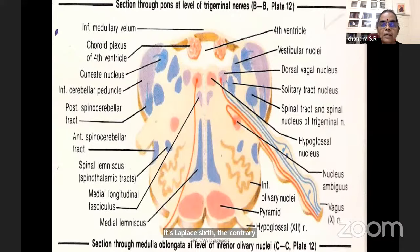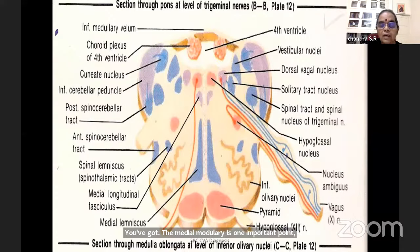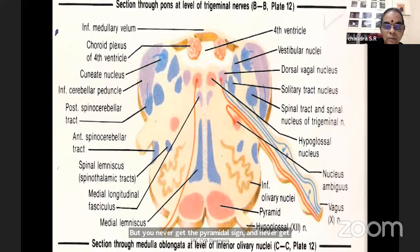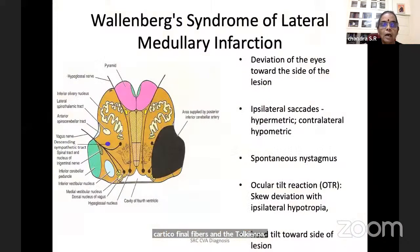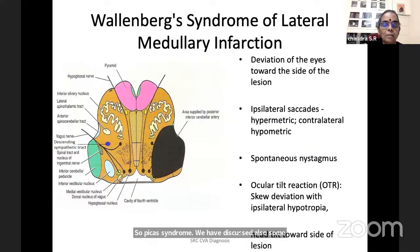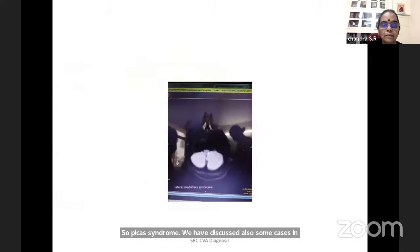In the medulla, there is medial medullary and lateral medullary syndrome. Lateral medullary syndrome: ipsilateral facial sensory loss, contralateral limb sensory loss, ipsilateral cerebellar ataxia, lower cranial nerve palsy, Horner's syndrome — but never pyramidal signs and never hemorrhage. PICA is the only territory where hemorrhage is never a differential diagnosis. Medial medullary syndrome involves proprioceptive fibers, corticospinal fibers, and the 12th nerve — very uncommon. Classical PICA does not produce pyramidal involvement and never hemorrhage. Small infarct but produces a lot of disability.